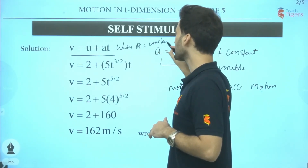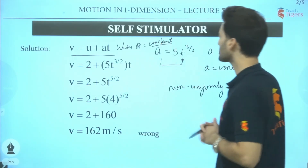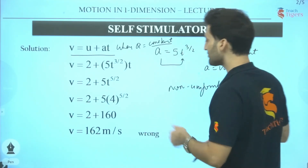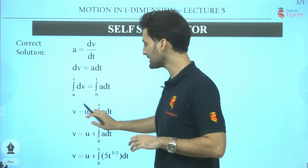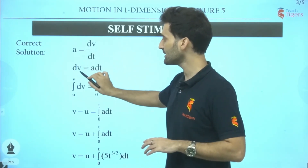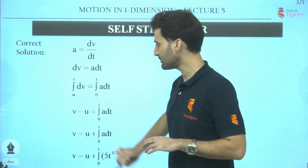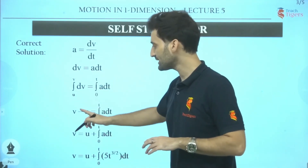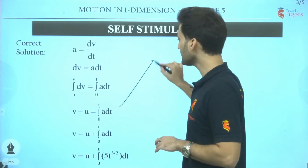The mistake is that acceleration a = 5t^(3/2) depends on time, so acceleration is not constant — this is Non-Uniformly Accelerated Motion. The formula v = u + at is only valid when acceleration is constant (uniformly accelerated motion). For non-uniform acceleration, we must use the general method: a = dv/dt, so dv = a dt. Integrating both sides with limits — velocity from u to v, time from 0 to t — gives v − u = integral of a dt. This is the correct approach.